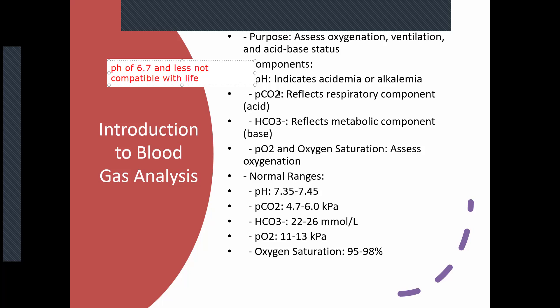The next thing we look at is PCO2 — the partial pressure of carbon dioxide. In essence, CO2 is the acidic component of our blood. The more carbon dioxide you have in your system, the more acidotic you become. As CO2 increases, pH decreases — they have an antagonistic relationship. As CO2 decreases, pH increases.